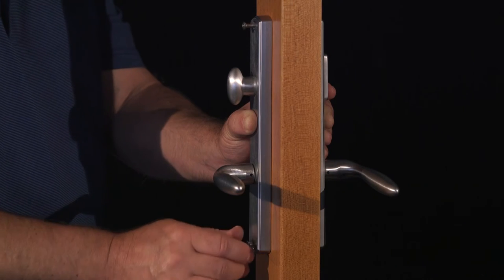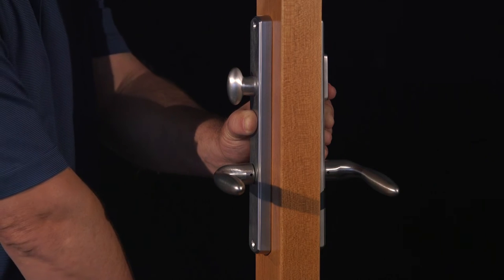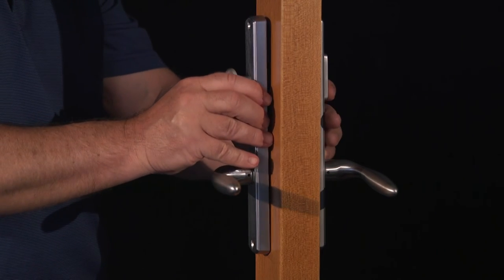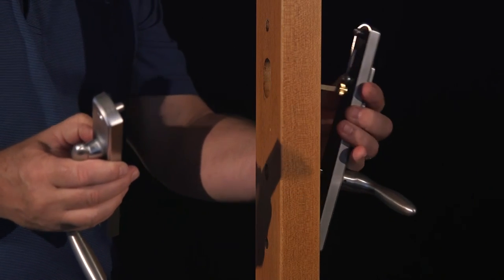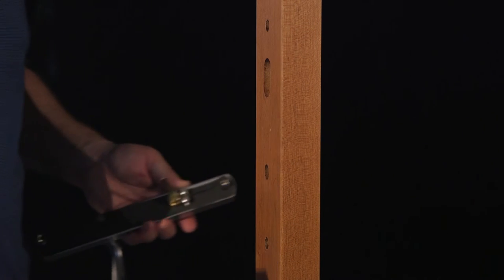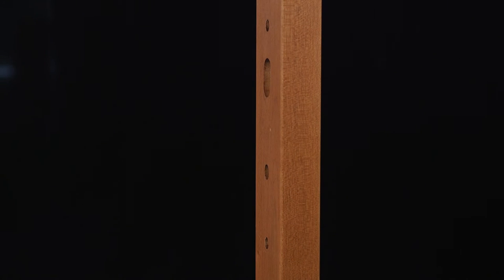To remove the lock from the door, begin by removing the HLS-7 Series Handle Set as shown in our previous video. Once the handle set is removed, your door will look something like this and you are now ready to begin.